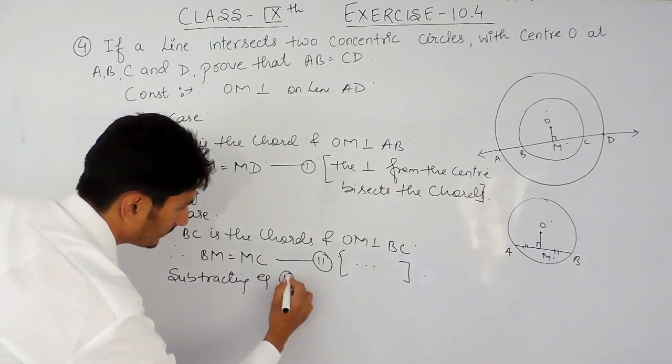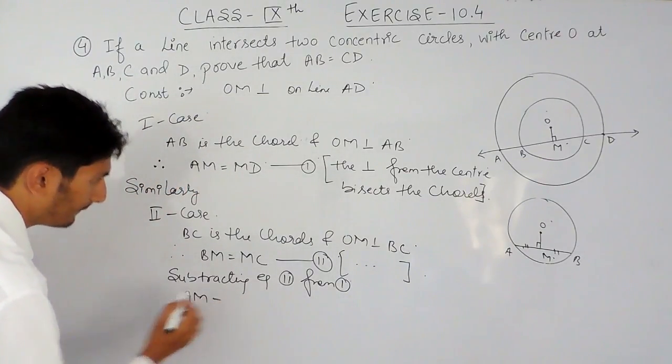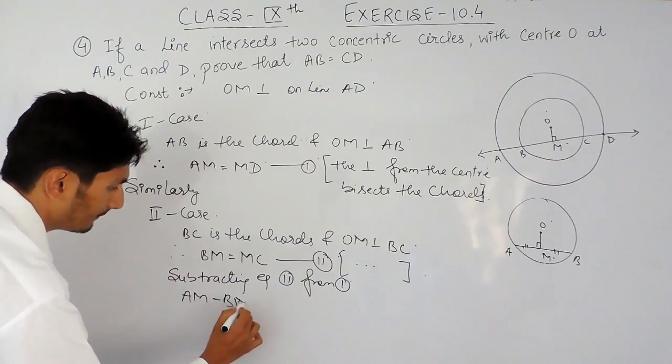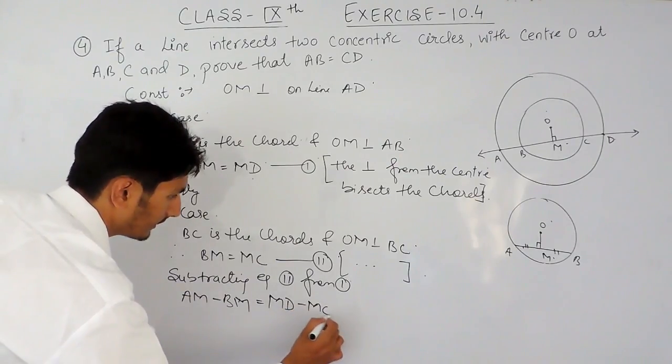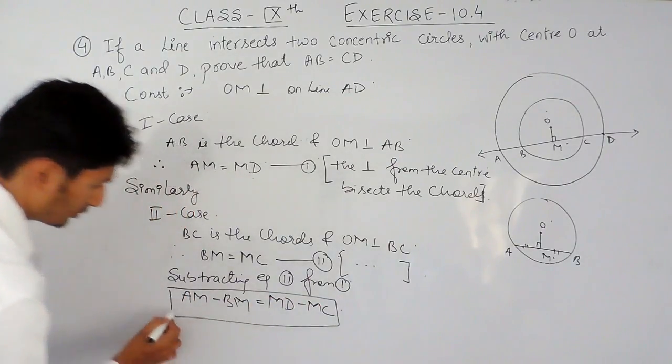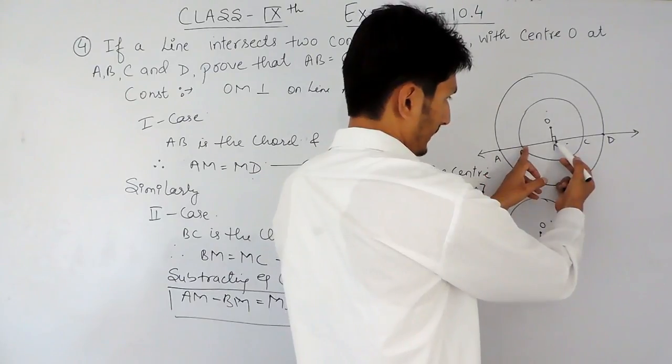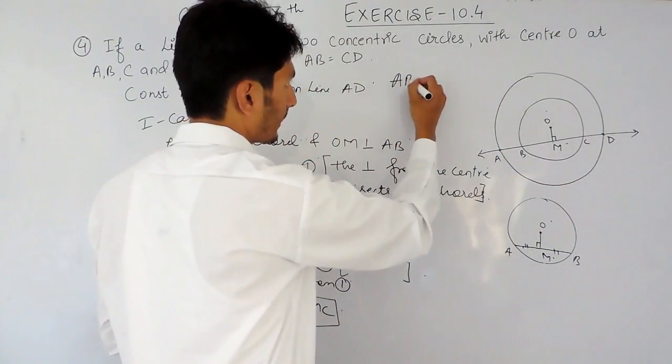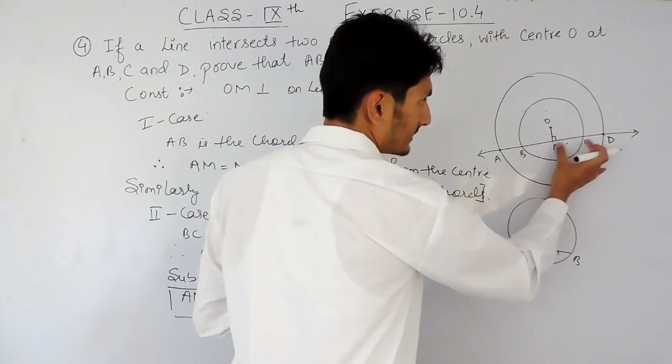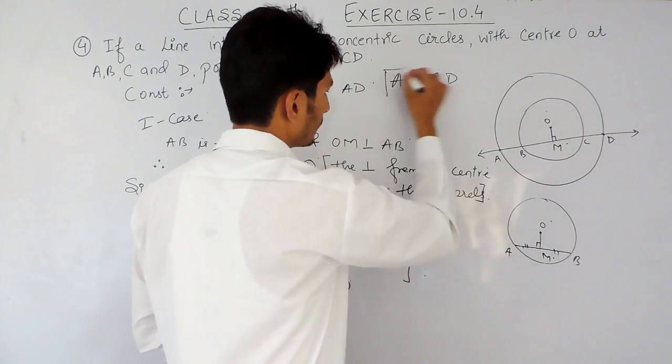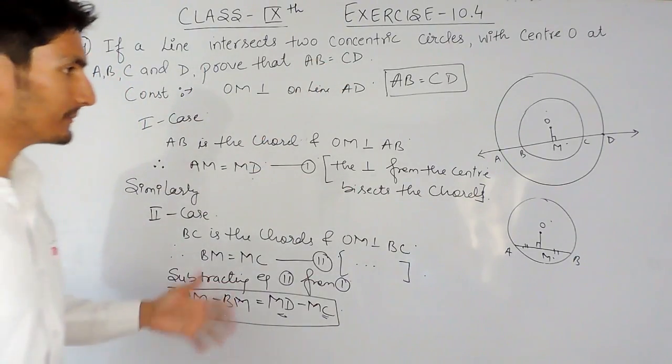Subtracting equation second from first, the length of AM minus BM will be equal to the length of MD minus MC. So here, AM minus BM will give me AB. And here, MD minus MC will give me CD. So, this is the thing we have to prove in this particular equation.